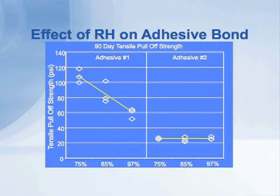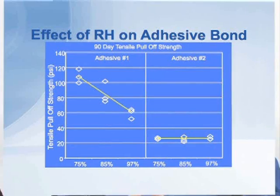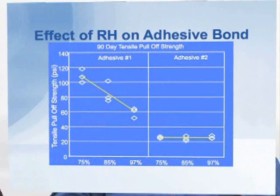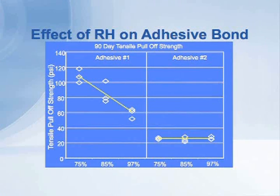So here's an example of an adhesive that's strongly affected, and we can measure that effect very precisely and accurately. It went from 100 to 120 psi down to around 60 psi as the humidity in the concrete went from 75 to 85 to 97%. As the relative humidity increased, bond strength decreases. The manufacturer can take this data and set a limit — 75% is good, at 85% we've lost 20% of bond strength, so we're going to set a limit of 75% for this particular adhesive. And that's a precise, scientific, technical way of doing it.